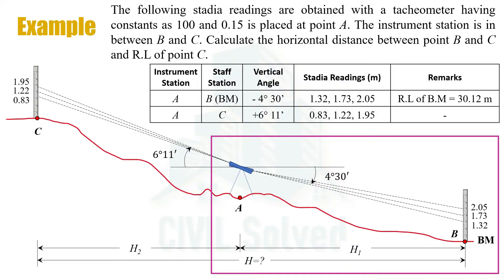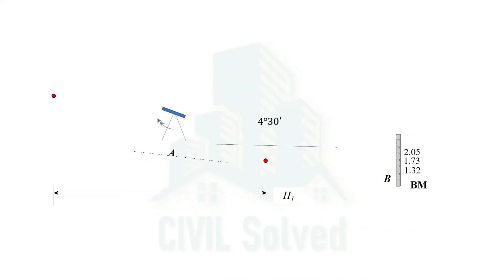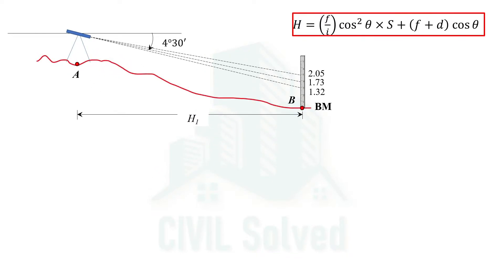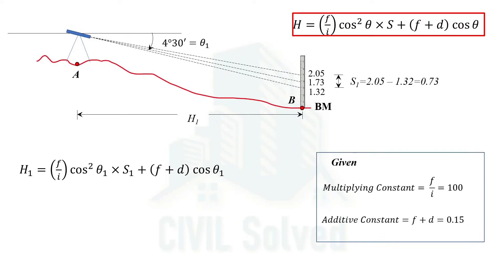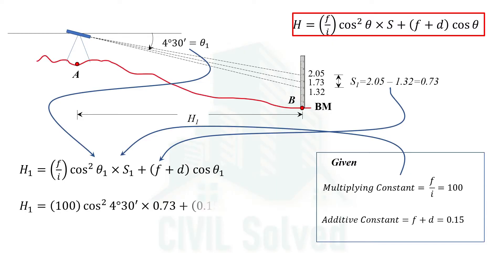Now let's consider the first setup for the determination of the horizontal distance between point A and point B. Recalling the horizontal distance formula from case number 2 of the Stadia method, we need the constants, vertical angle theta1, and the staff intercept S1. The staff intercept is the difference of upper and lower Stadia readings, which comes out to be 0.73. Placing the values of theta1, S1, and the multiplying and additive constants, the horizontal distance H1 equals 72.7 m.